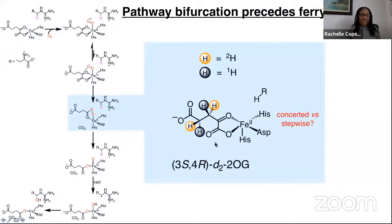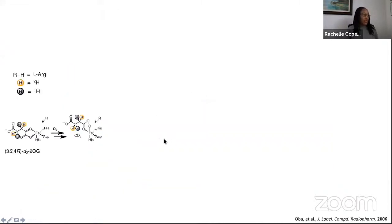How did we introduce stereochemistry into 2-OG? We did this by synthesizing stereospecifically deuterated 2-OG. In the figures I'm going to show, the orange represents deuterium, the black represents protium. I'll illustrate that in more detail here.